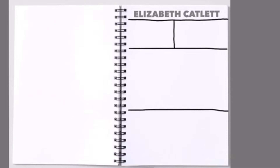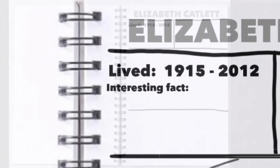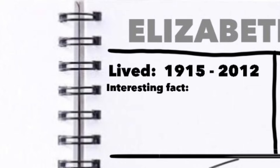Divide it pretty much like this — two smaller rectangles towards the top and two larger rectangles towards the bottom. The top-left section is going to contain some information about Elizabeth Catlett. I want you to include the years that she lived, which was 1915 to 2012, and also research an interesting fact about her.